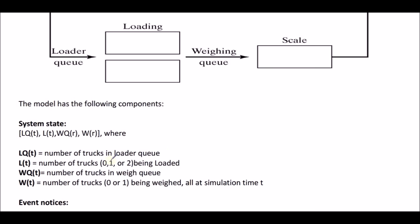If there were three loaders, L(t) could be 0, 1, 2, or 3 — it depends on how many loaders you have. Then we have WQ(t), which indicates the number of trucks in the weighing queue waiting to be weighed on the scale. Next is W(t), the number of trucks currently being weighed at the scale. Since we only have one scale, W(t) will be either 0 or 1.